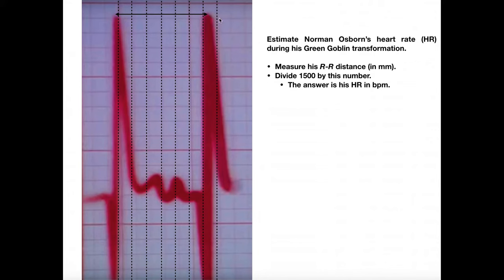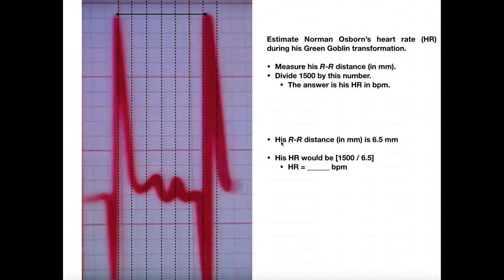We're going to estimate Norman Osborn's heart rate during his Green Goblin transformation. The first thing we want to do is measure the RR distance and then divide 1,500 by that number. Here's the peak of the first QRS complex — the R wave — so we count over: 1, 2, 3, 4, 5, 6. Because this dotted line is a little bit after one peak and a little bit before the next, I'm going to say it's about 6.5 millimeters.